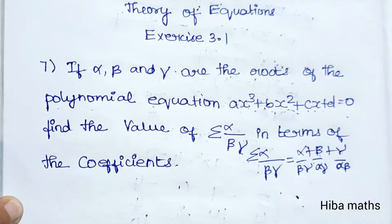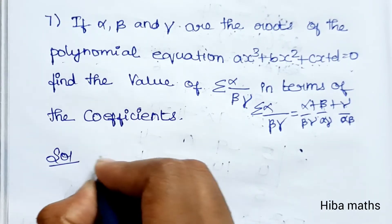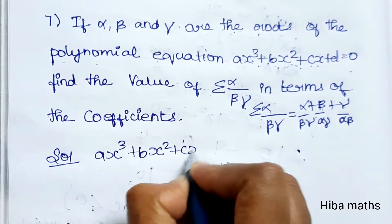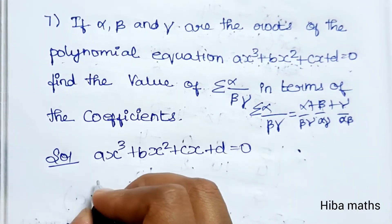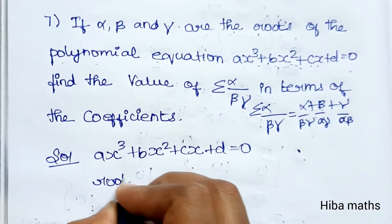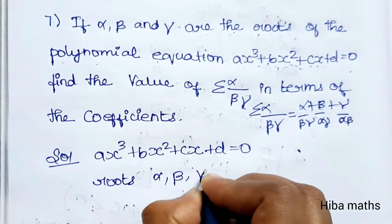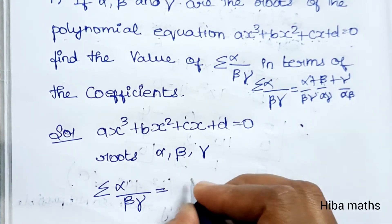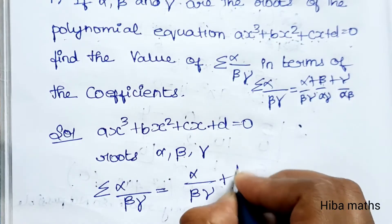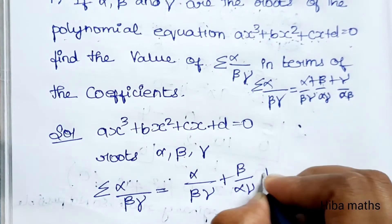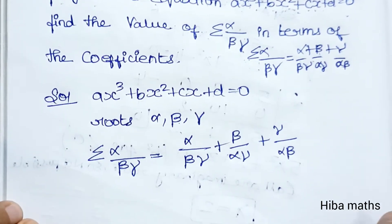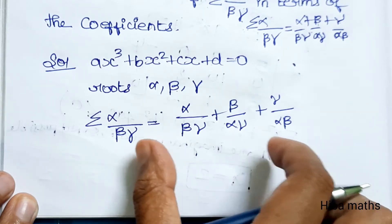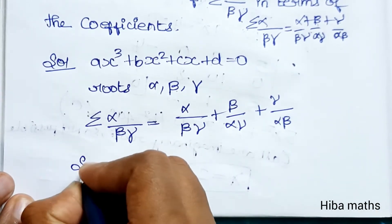In terms of coefficients, we consider the equation ax³ + bx² + cx + d = 0. Expanding the summation: alpha over beta·gamma, plus beta over alpha·gamma, plus gamma over alpha·beta, plus beta·gamma. This adds up using the sum of the roots.